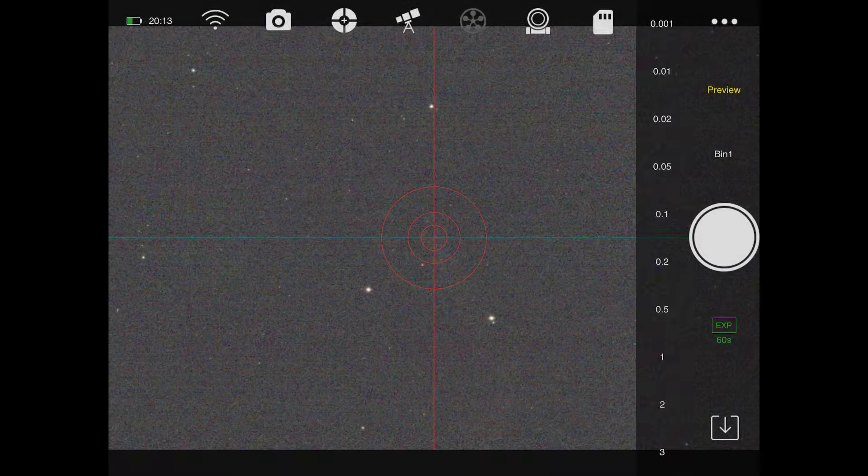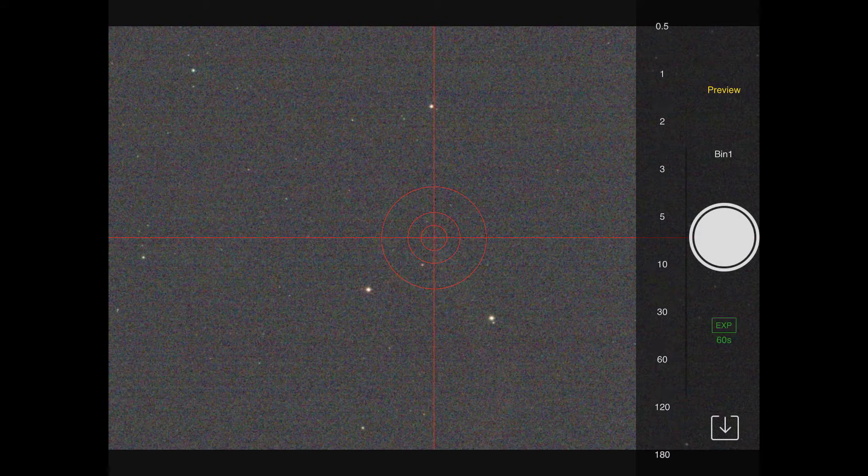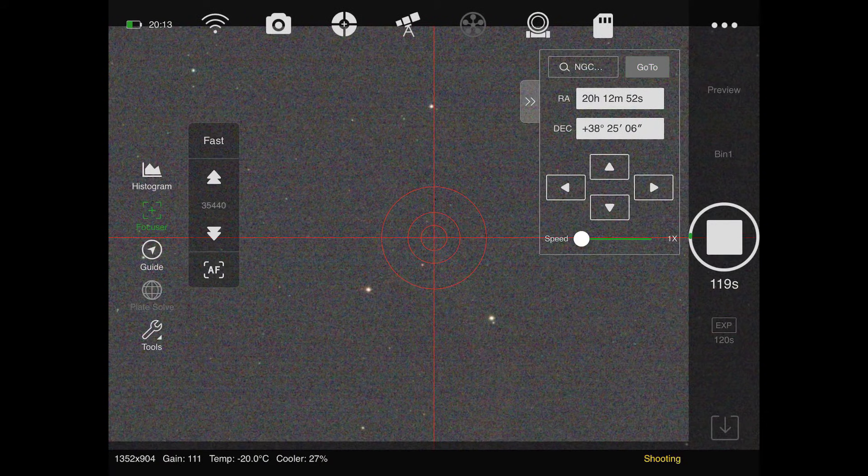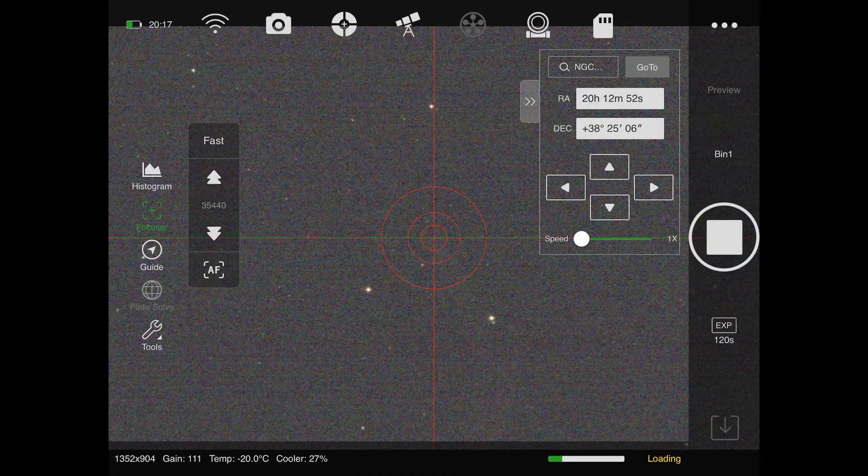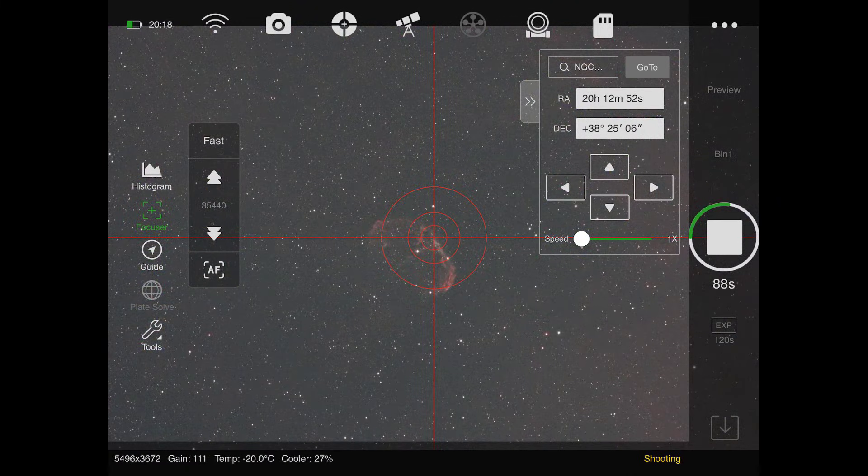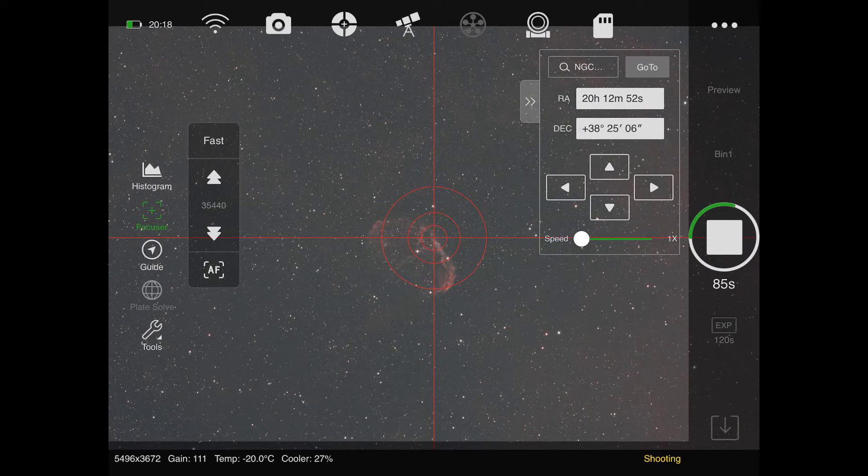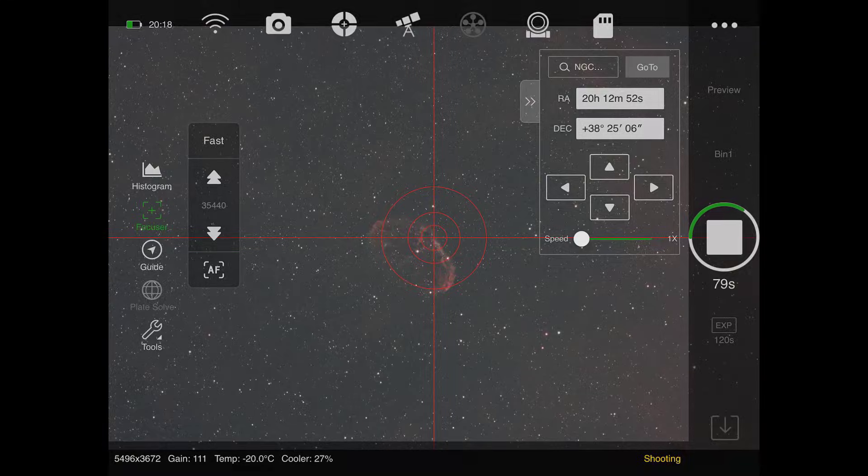Now that the autofocus has succeeded, I'm just going to go ahead and take a two-minute test exposure of the Crescent Nebula and see how it turns out. Here it comes. Let's see how it looks. It's loading up now. And there you have it. Looks pretty good. The 183 MC Pro has really good sampling on the RASA 8 as well. The stars are nice and round and the focus looks really nice to me.